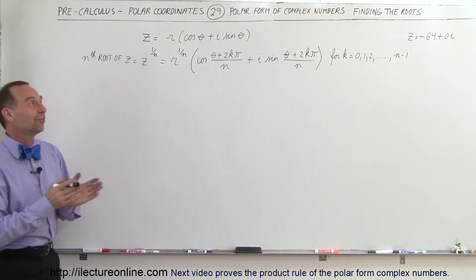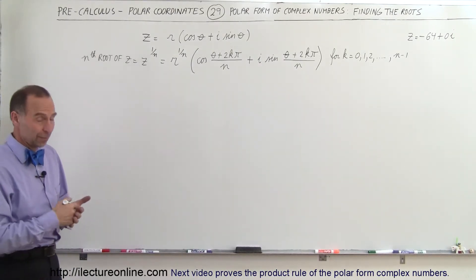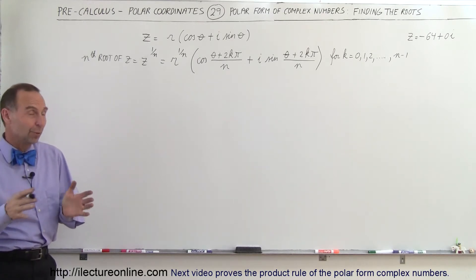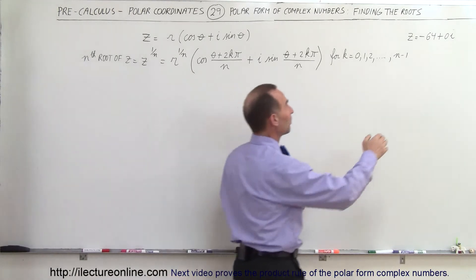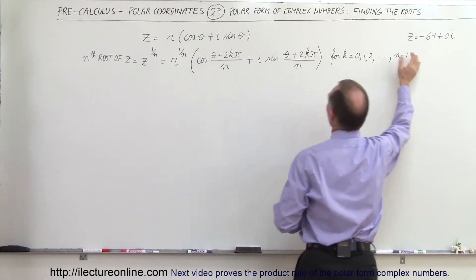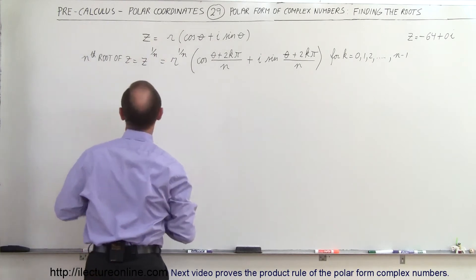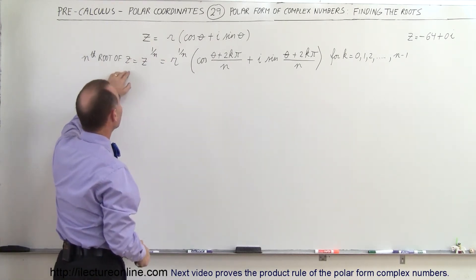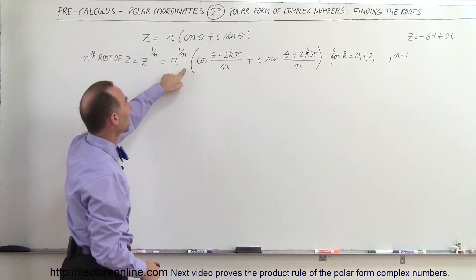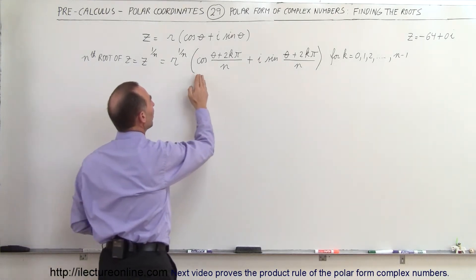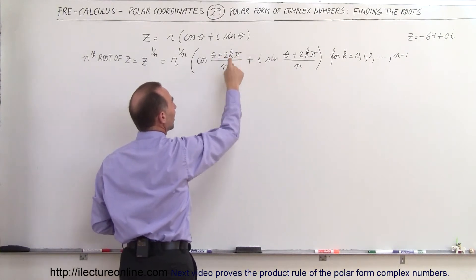Welcome to ElectronLine. In this video we're going to show you how to find the roots of a complex number once it's put into polar form. If we take the nth root of z — z to the 1/n power — that would be equal to r to the 1/n power times the cosine of the angle plus 2k times pi divided by n.